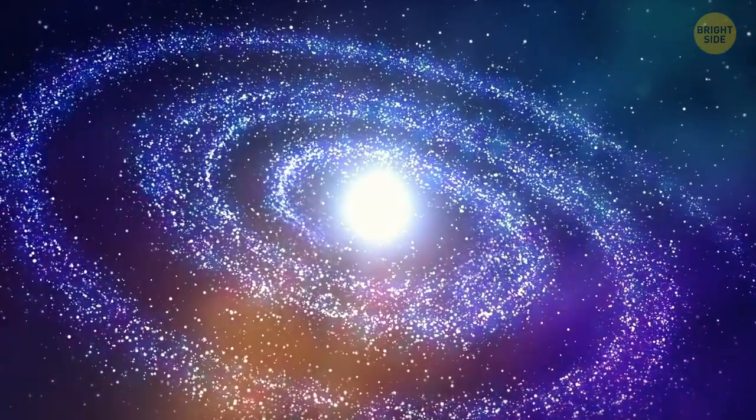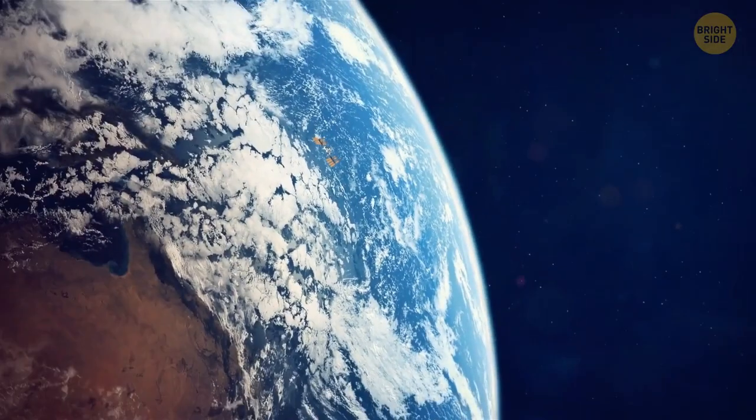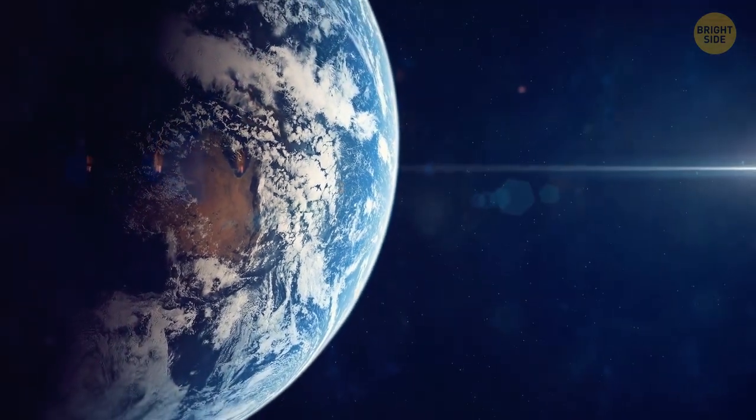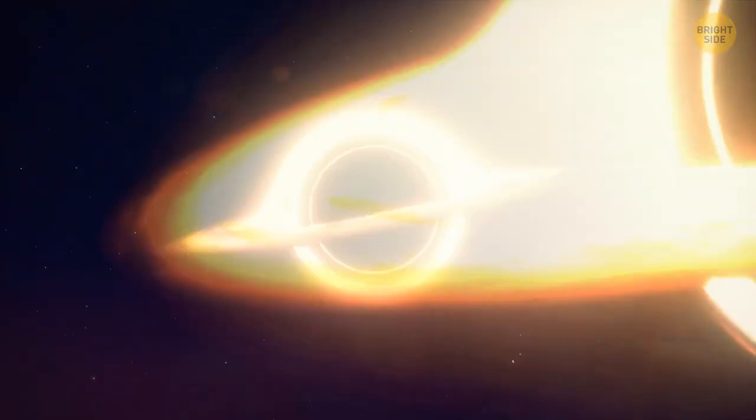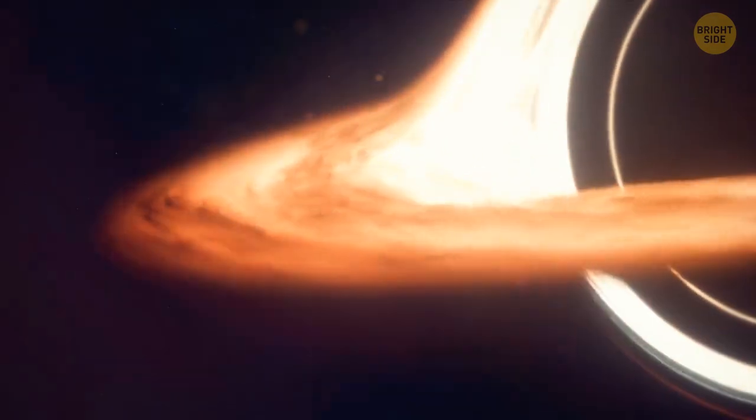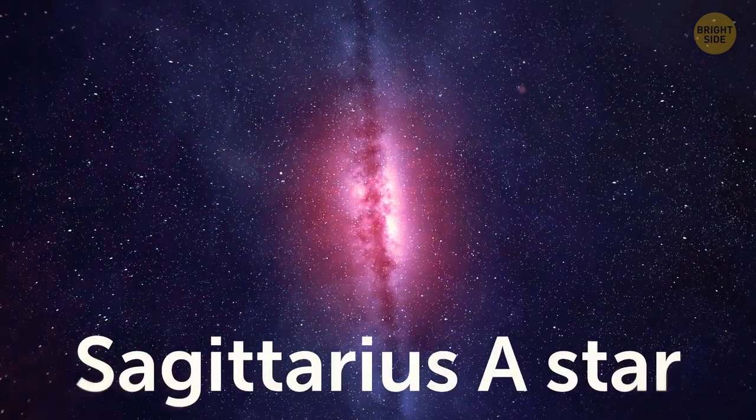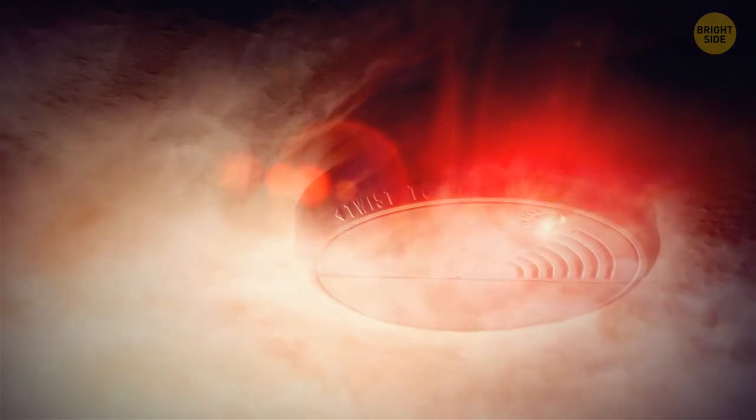Until 2002, we didn't know what was at the center of our galaxy, the Milky Way. We knew we were rotating around something, but it took us until the 21st century to figure out it was a supermassive black hole with a mass 4 million times bigger than our sun, located in a region of the Milky Way called Sagittarius A star. The discovery took place after we came up with the infrared smoke alarm.